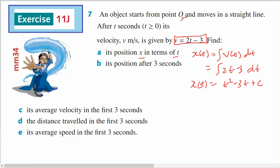And since it starts from the origin, when x is 0, t is 0, so therefore c is 0. So x of t will equal t squared minus 3t.